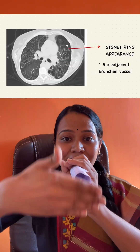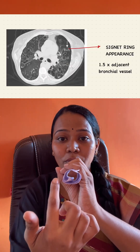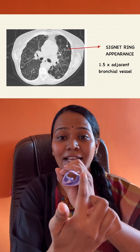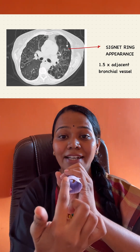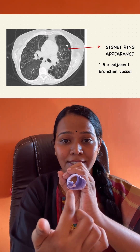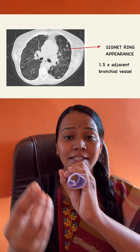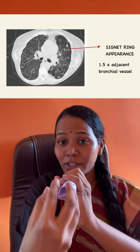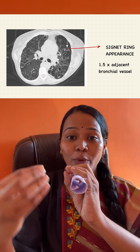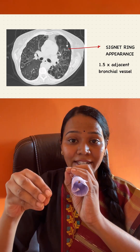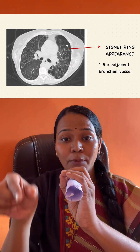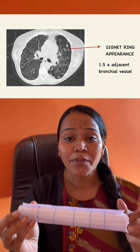Next, if you are seeing a cut section like this, you are going to find a ring appearance which is called the signet ring appearance. How much should the size be? It should be 1.5 times the nearby bronchial vessel.